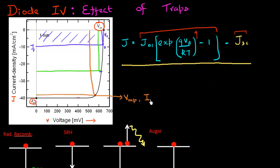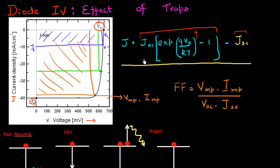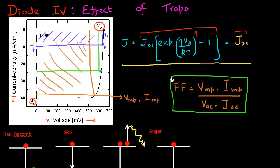The corresponding current is called the maximum power current. Another important parameter is the fill factor, which is defined as the area at which maximum power occurs — VMP times IMP — divided by the open circuit voltage and the short circuit current. This is used to characterize solar cells. For an ideal cell with not many sources of recombination or non-idealities, the fill factor is typically very high, close to 90% or even higher.